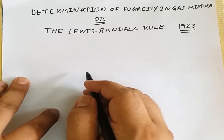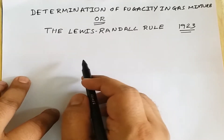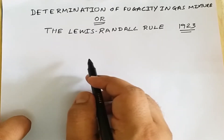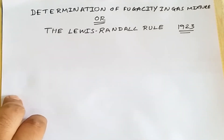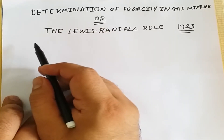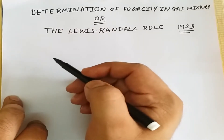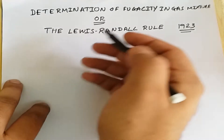For example, if we have a mixture of real gases like a mixture of oxygen and nitrogen, the fugacity of that gas mixture can be deduced easily using the Lewis-Randall rule. This derivation is based on the graphical method we have already discussed.